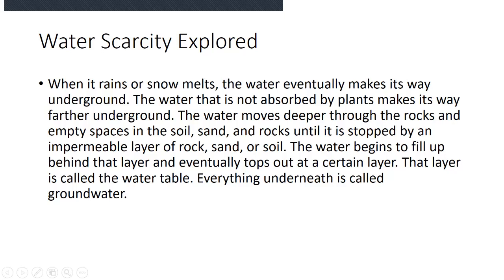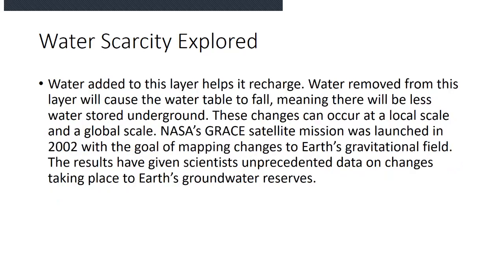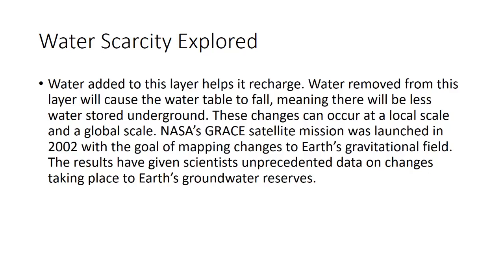We've talked about surface water — water that we can see on the surface, such as rivers, lakes, streams, etc. Groundwater is underneath the earth's surface. Water added to this layer helps it recharge. Recharge comes from snow or rain. Water removed from this layer will cause the water table to fall, meaning there will be less water stored underground.